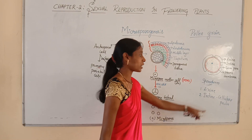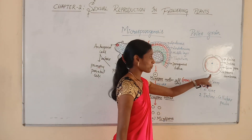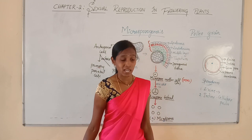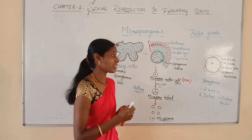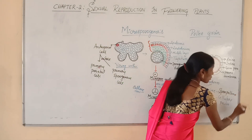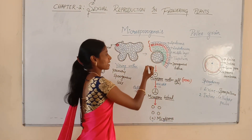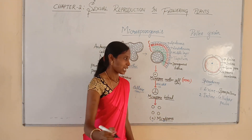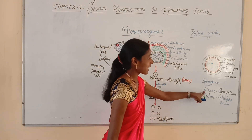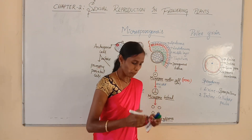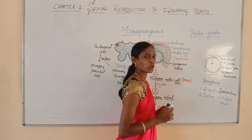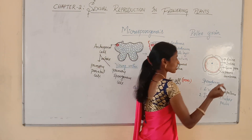The outer layer is called the exine, which is usually hard, thick, and a discontinuous layer. It is mainly made up of sporopollenin. Sporopollenin is one of the highly resistant organic materials. The exine is made up of sporopollenin. Why is it called a discontinuous layer? Because in some regions the exine or sporopollenin is absent — that exact region is called the germ pore.